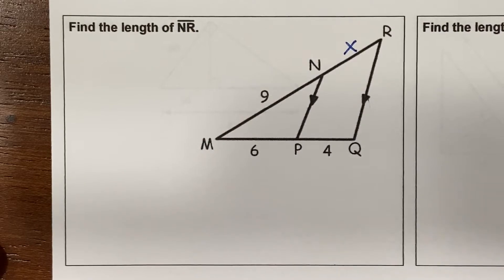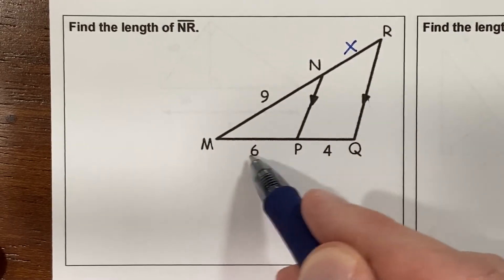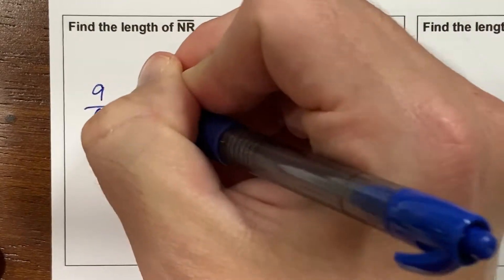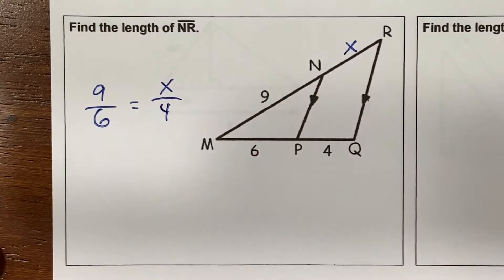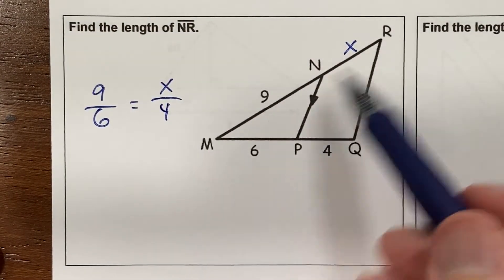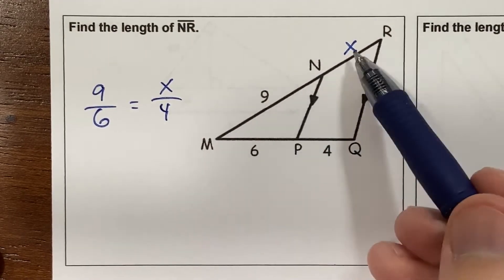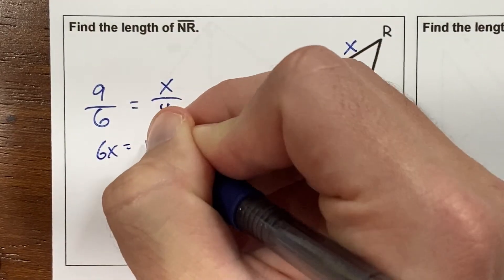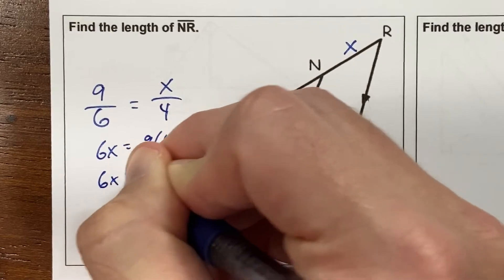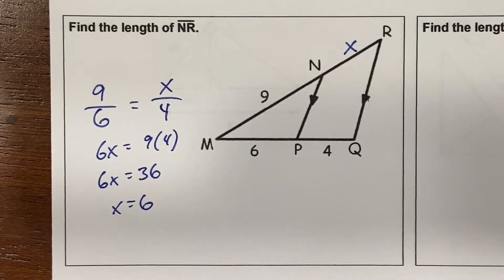There are several different ways we can set up our proportion. The most basic way is: this part is to this part — 9 is to 6 as x is to 4. The ratio of this part to this part is the same as this part to this part. We cross multiply: 6 times x equals 9 times 4, so 6x equals 36, divide by 6, and you get x equals 6.